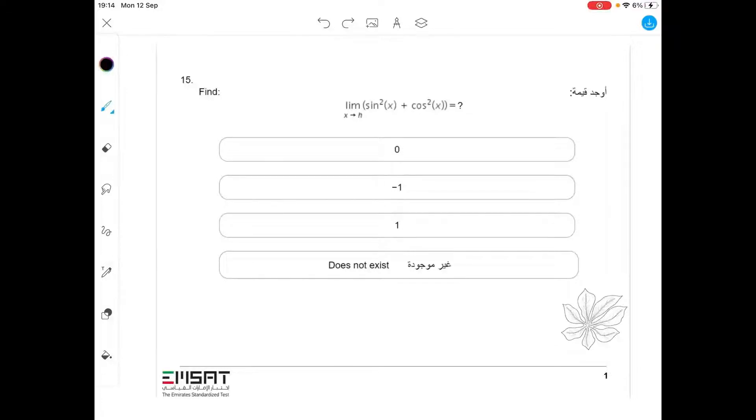Hello, this is an EMSAT question. The question says: find the limit as x approaches h of sine squared x plus cosine squared x.